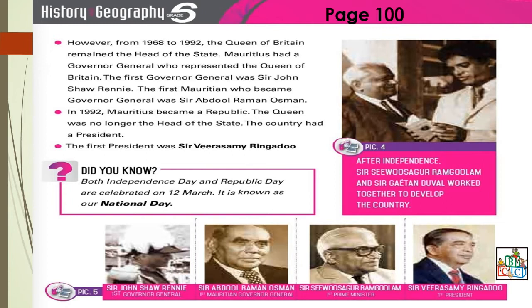Looking at picture 5, you have some important personalities. First, Sir John Shaw Rainey, who was the first Governor General. Then the first Mauritian Governor General, Sir Abdul Rahman Osman. The first Prime Minister was Sir Seewoosagur Ramgoolam. The first President was Sir Virasamy Ringadoo. You will have to remember all of this, including how to write the names properly.